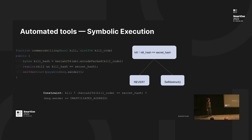Consider this program — command scaling. In this function call, the symbolic execution engine assumes the inputs as symbolic; in this case, 'kill' and 'kill code.' Then the function gets executed. There are two different possible program states: the first state is when the require satisfies, which leads to self-destruction; and if the require fails, we head to the revert program state.